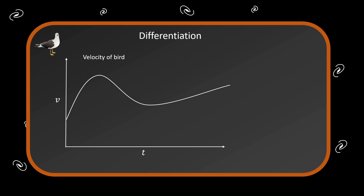Now let's begin with differentiation, moving later, of course, to integration. But let's start with the slope of a curve — what derivatives are about, the purpose they serve. Let's look at this graph with peaks and valleys, the bird's velocity as it soars and valleys. Let's say that we want the slope at a point — we connect a line. Let's now move the points together, take a limit, of course.